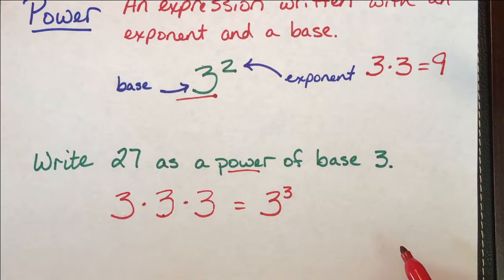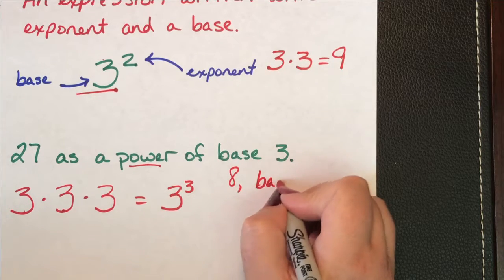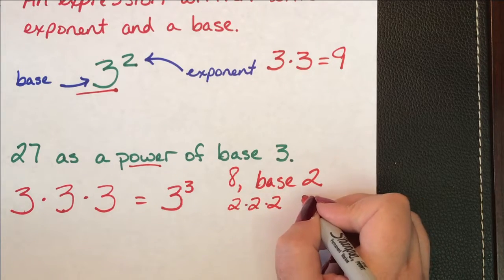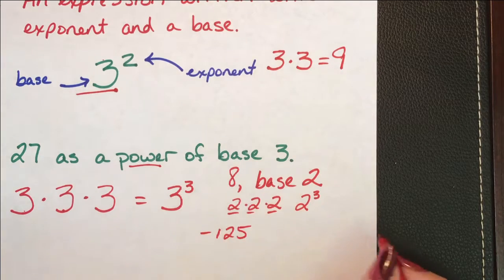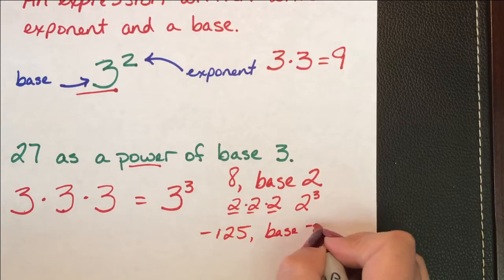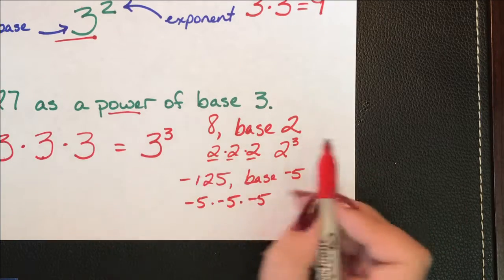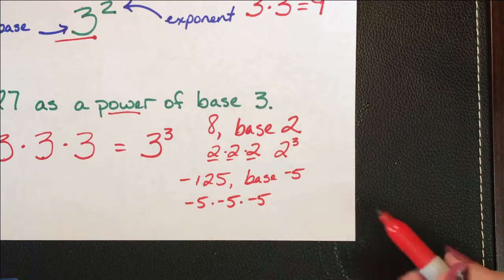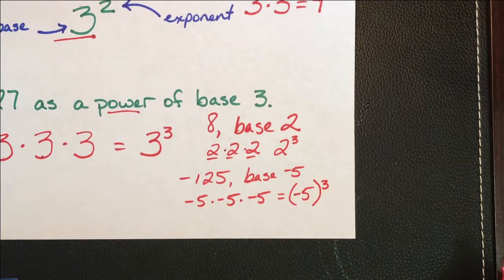If you look at example number 3 on page 27, it asks you to write each number as a power of the given base. It says 8 base 2 and it walks you through 2 times 2 times 2 equals 8. So you're going to have 2 with a power of 3 because we used 2 three times. Negative 125 base negative 5. And they give you the base so you don't have to guess it. This is negative 5 times negative 5 times negative 5, which means that negative 5 to the third power is our answer here.